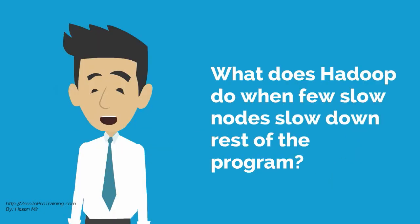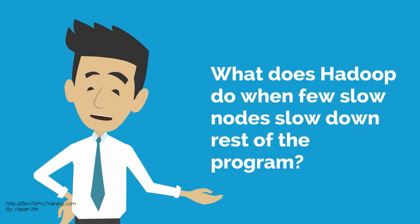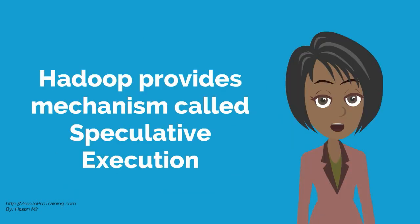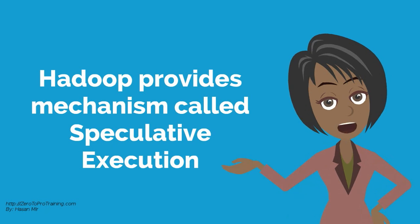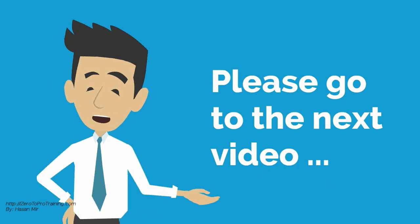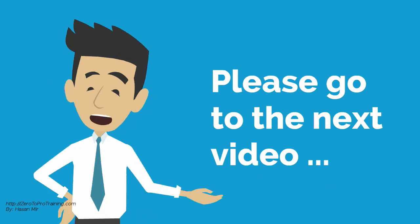How does Hadoop deal with the situation when a few slow nodes slow down the rest of the program? To address this situation, Hadoop provides a mechanism called speculative execution. We will continue with more questions in the next part, including understanding speculative execution in detail.